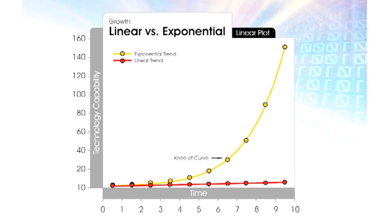If I take 30 steps exponentially — 2, 4, 8, 16 — I get to a billion. It makes a huge difference. And that really describes information technology.